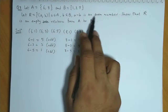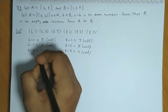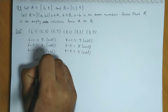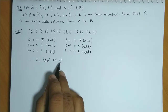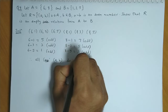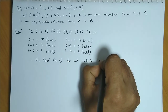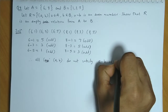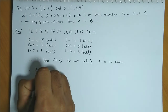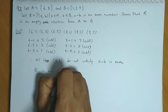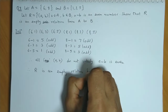None of the ordered pairs satisfy the given condition. Therefore we can say all the (a, b) pairs do not satisfy a minus b is even. So therefore R is an empty relation from A to B.